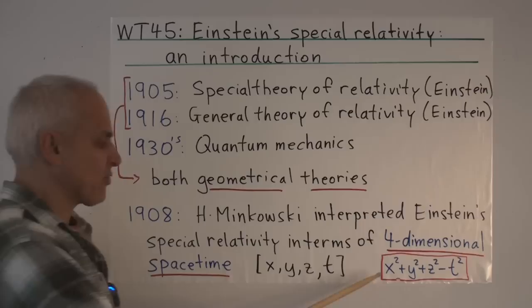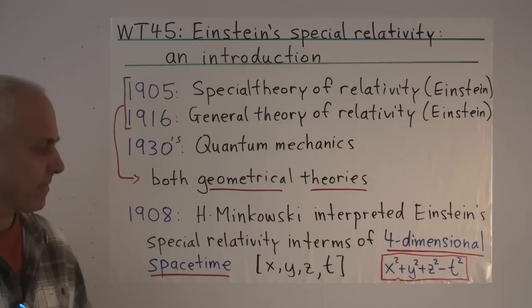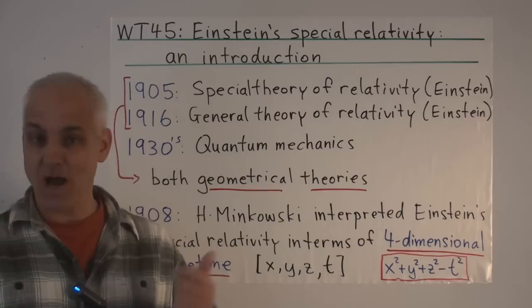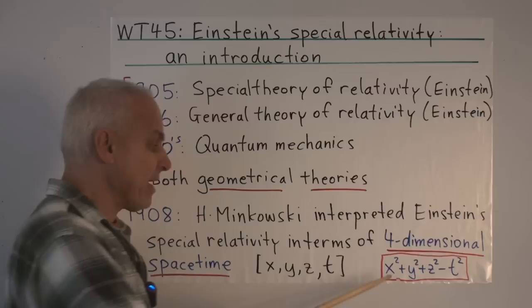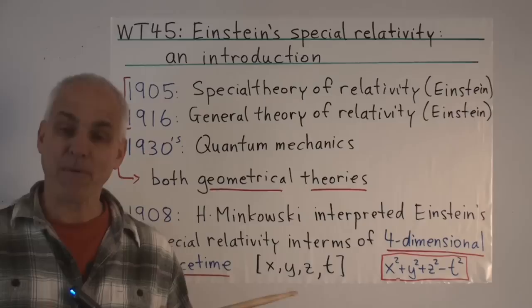And in that space-time, this quadratic form that Einstein used over and over again, x squared plus y squared plus z squared minus t squared, plays the role of the quadrants in ordinary three-dimensional space. Now, one thing that's really different about this one is this negative sign here, which means that this quadrants can sometimes be negative, which means that ordinary geometry, based on distance and angle, has a very difficult time establishing itself in this framework.